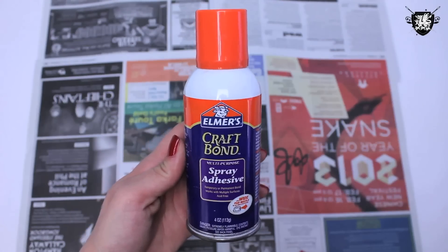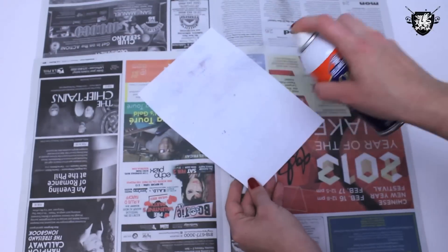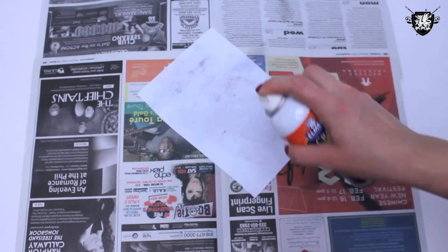Next, cover your workspace and spray some spray adhesive onto the back of your image. If you don't have spray adhesive, a glue stick would probably work just fine.